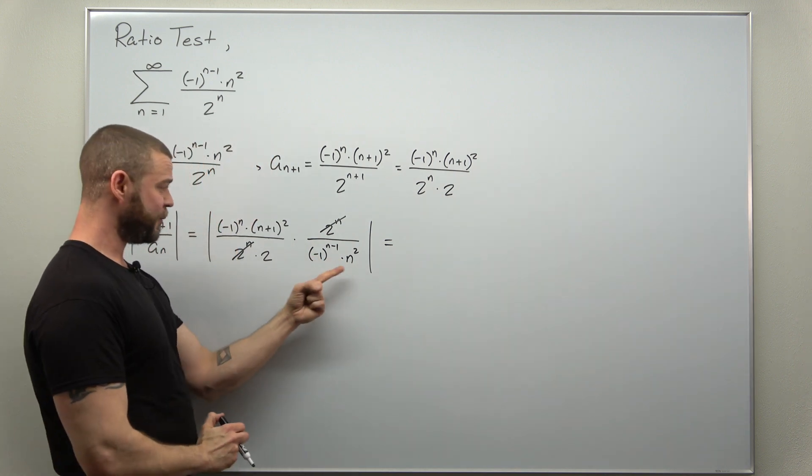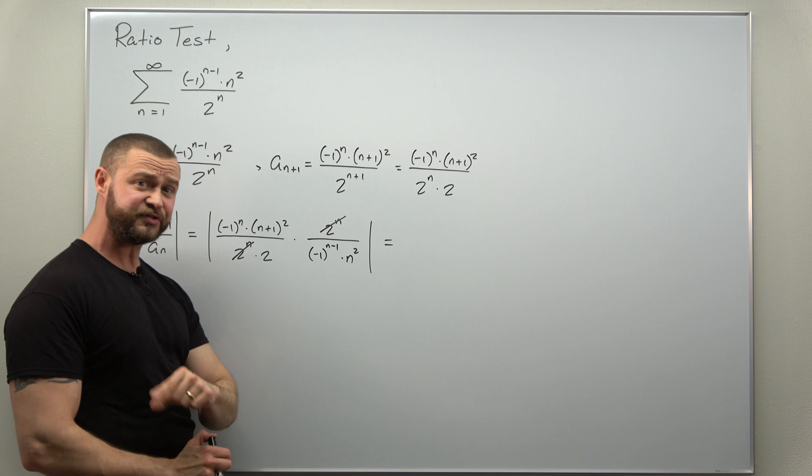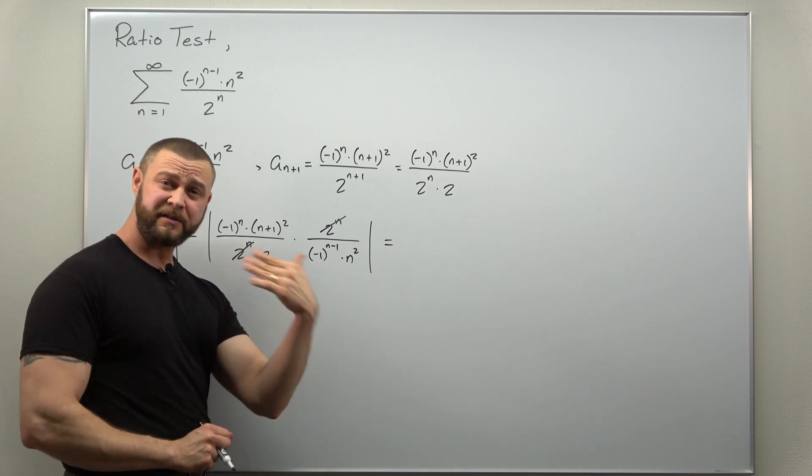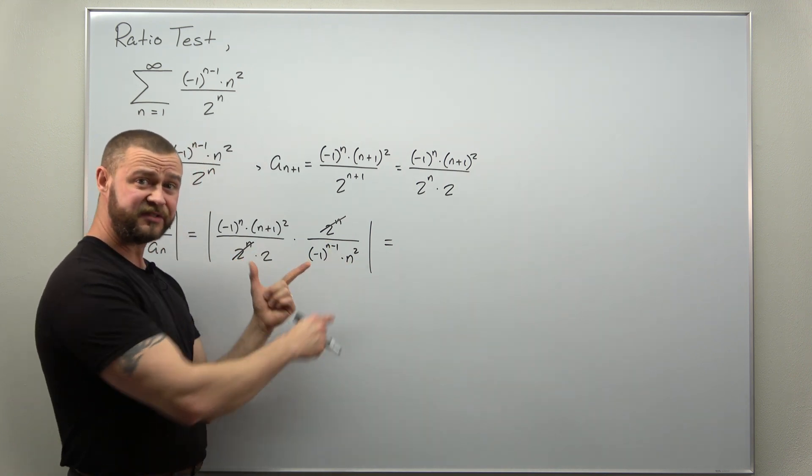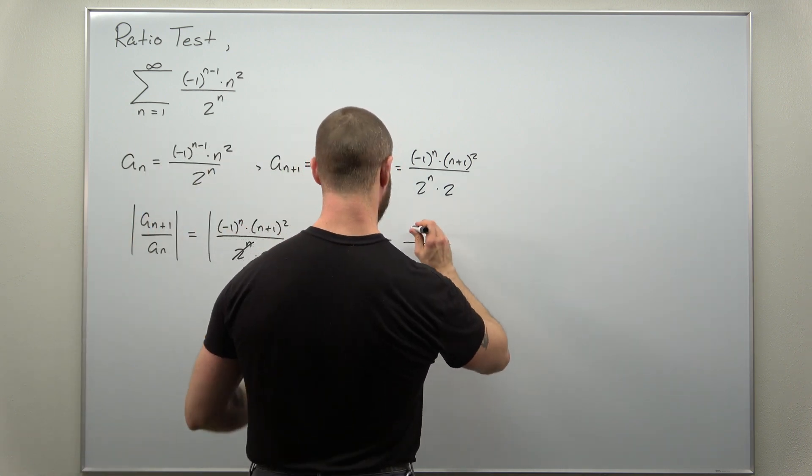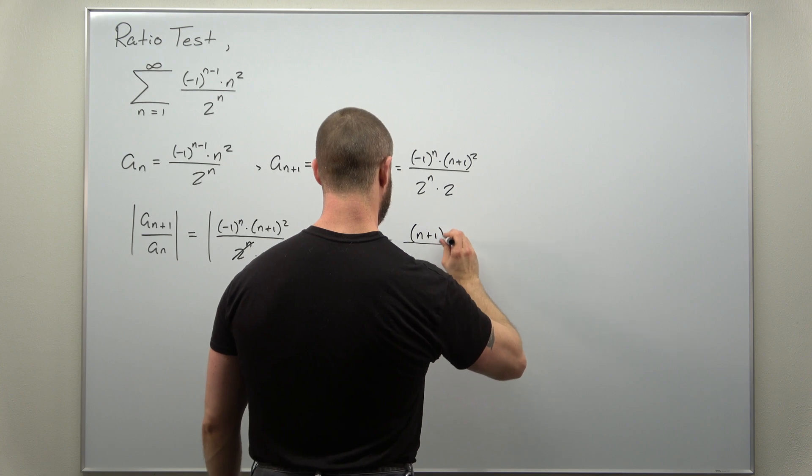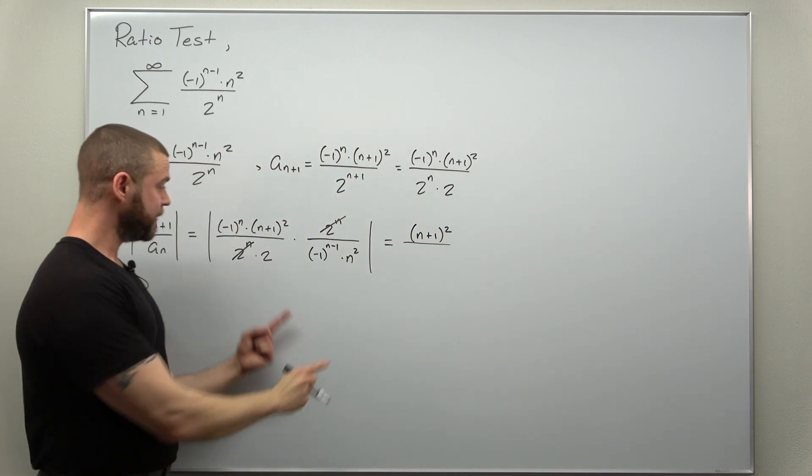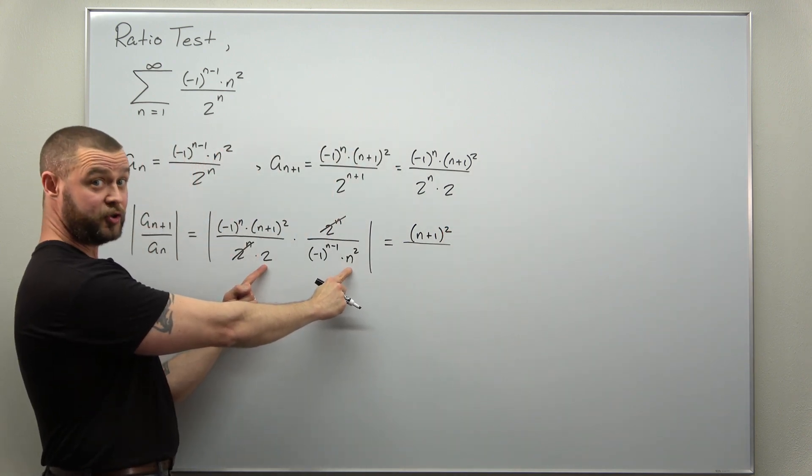Now what we're going to be left with is in the numerator n plus one squared and two n squared in the denominator. Since n is positive and we have n squared and n plus one squared, the absolute value here doesn't matter since the quantity inside will be positive anyway. So we can write this simplified end result as n plus one squared divided by two n squared.